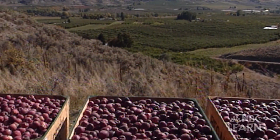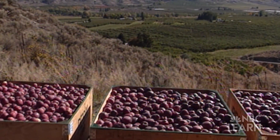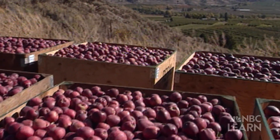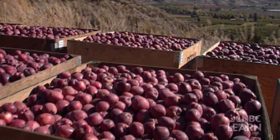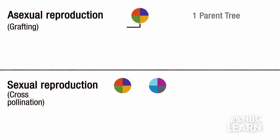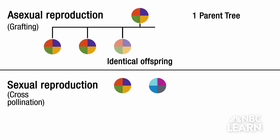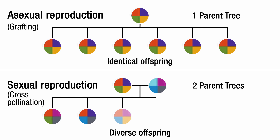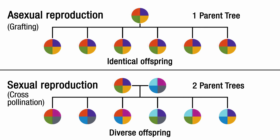In order to answer that question, you must first understand the difference between sexual and asexual reproduction. Asexual reproduction produces offspring that are genetically identical to the parent. Sexual reproduction produces diversity, which means the offspring have different genes than the parents do.